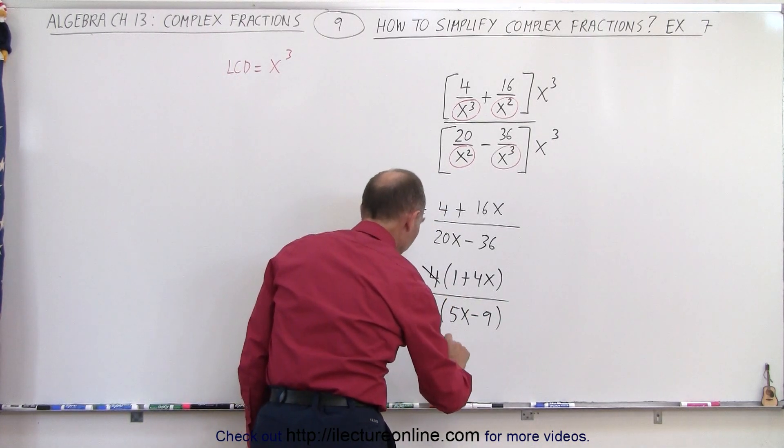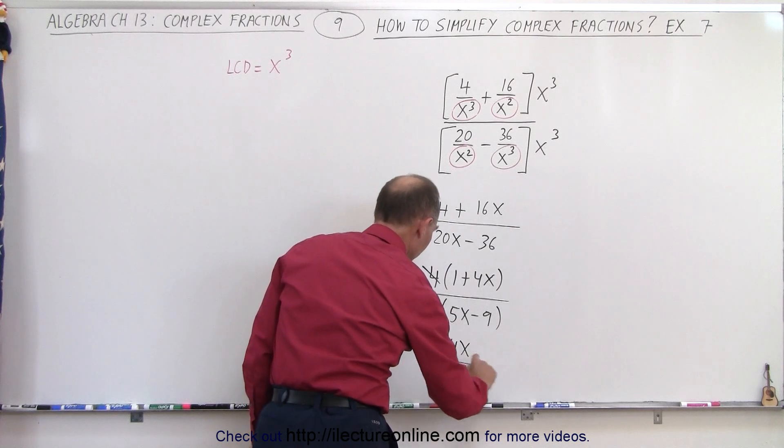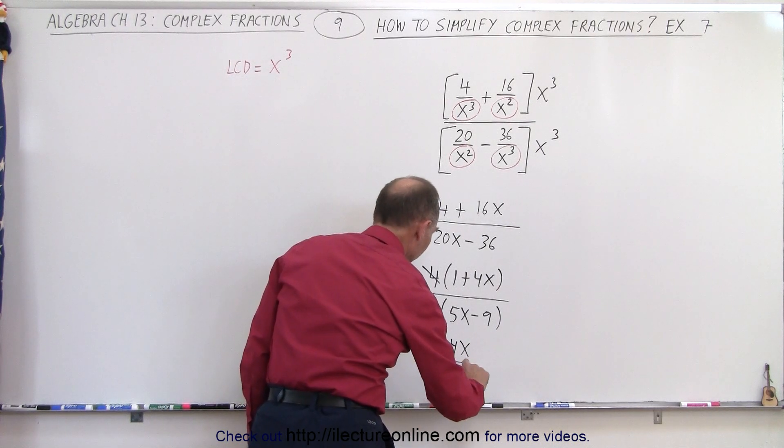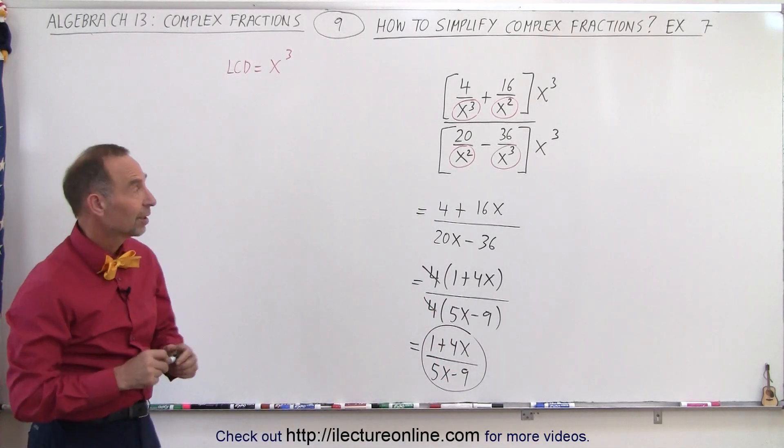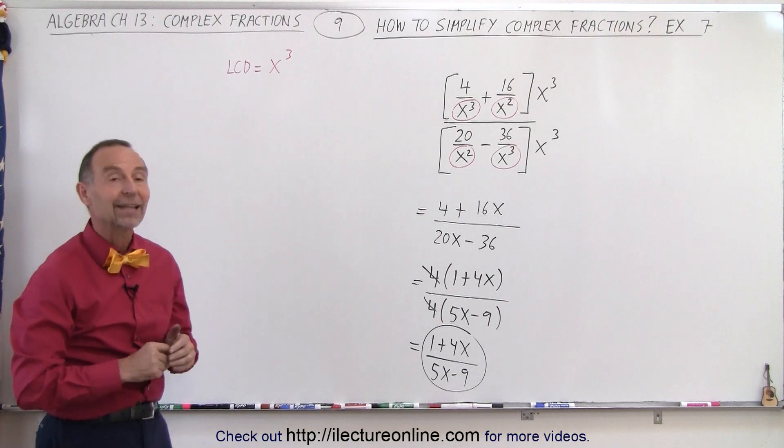And so the 4s cancel out, and I'm left with 1 plus 4x divided by 5x minus 9 as the final reduced form of that original complex fraction. And that is how it's done.